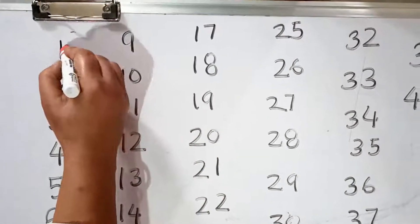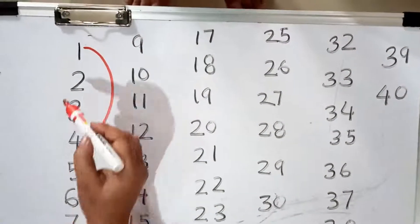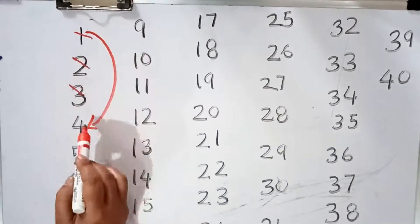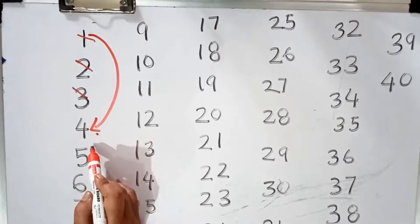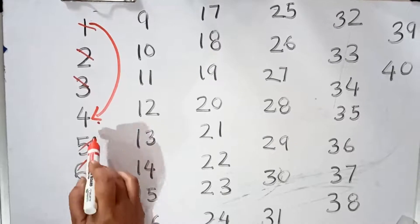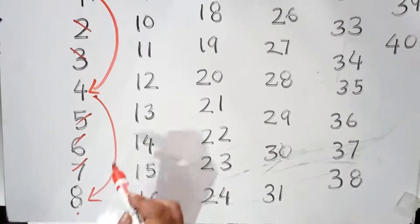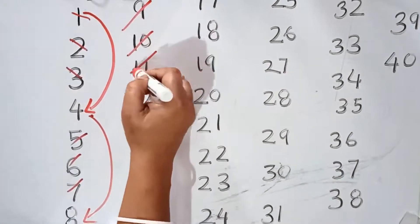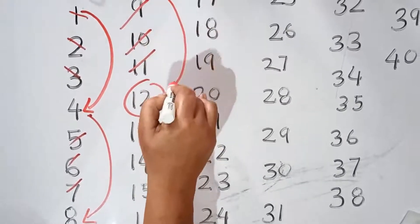First, you have to jump to number 4. See, this is number 4. Now, how many numbers did we skip? 1, 2, 3 — the first number is 4. Next, same way, jump 3 numbers: 1, 2, 3 — skipping 5, 6, 7 — the next number is 8. See, this is number 8. Again, jump 3: 9, 10, 11 — the next number is 12.